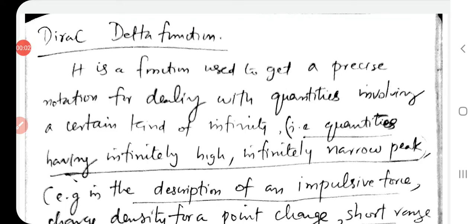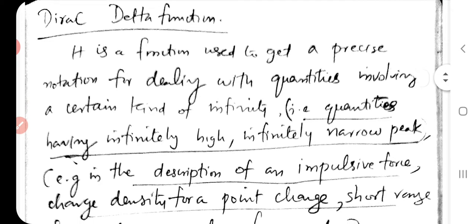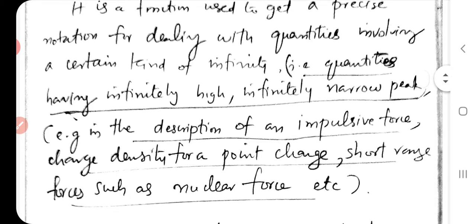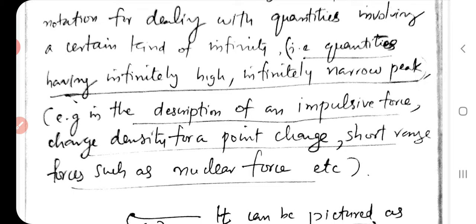Today we discuss the Dirac Delta function. After the Gamma function and Beta function, the special function we discuss is the Dirac Delta function. It is a function used to get a precise notation for dealing with quantities having a certain type of infinity — specifically, quantities having an infinitely high and infinitely narrow peak.